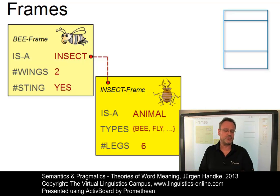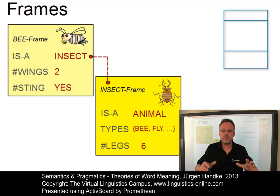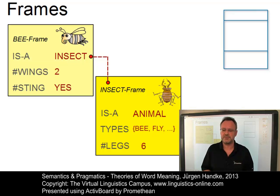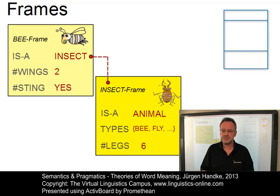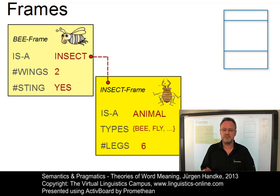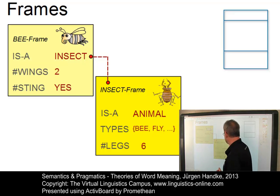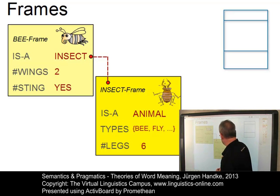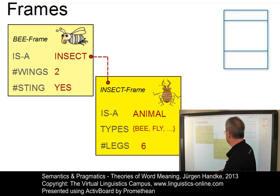Each lexeme is assumed to evoke a particular frame, which is networked with all sorts of additional frames. Thus, frames also involve the notion of inheritance, in that subframes can inherit elements and attributes from their parent frames. So bee once more inherits from its parent frame, insect, the fact that it has six legs.